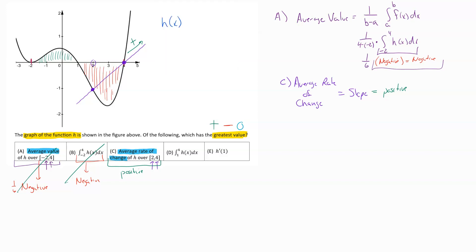Looking at option D, this wants the integral from one to four. Well, that's the area between the curve and the x-axis from one here until four right here. Well, that is that full negative space. And so that is going to have a negative value. Don't know what the value is, but I know it's negative. And a negative is not going to be bigger than a positive. So we throw that out.